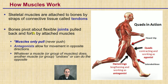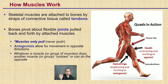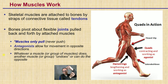So how do muscles work in a very basic sense? Skeletal muscles are attached to bones by straps of connective tissue called tendons. Bones pivot about flexible joints, pulled back and forth by attached muscles. An important point is that muscles can only pull, never push — they can only pull things together. Antagonists allow for movement in the opposite direction. Whichever a muscle or group of muscles does, another muscle or group undoes it, causing the joint to rotate about that fulcrum.